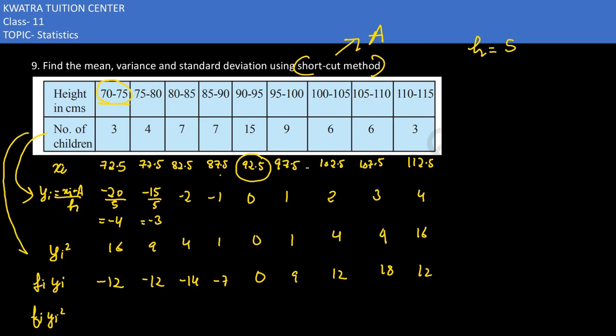Next step is f_i * y_i squared. These need to be multiplied: 16 into 3 is 48, 9 into 4 is 36, 7 into 4 is 28, 7 into 1 is 7, 15 into 0 is 0, 9 into 1 is 9, 6 into 4 is 24, 6 into 9 is 54, 16 into 3 is 48.